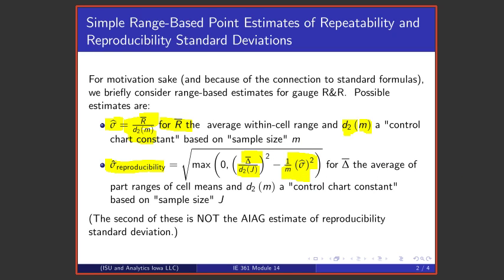We have to do that on a variance scale not on a standard deviation scale. So we're going to square and then we're going to subtract 1 over m times the estimate of the repeatability standard deviation, and then take the square root.